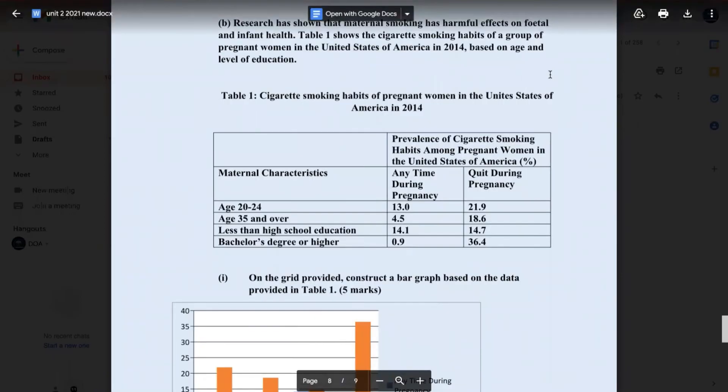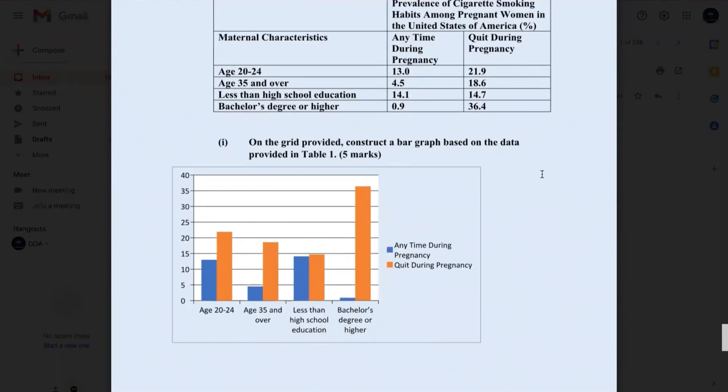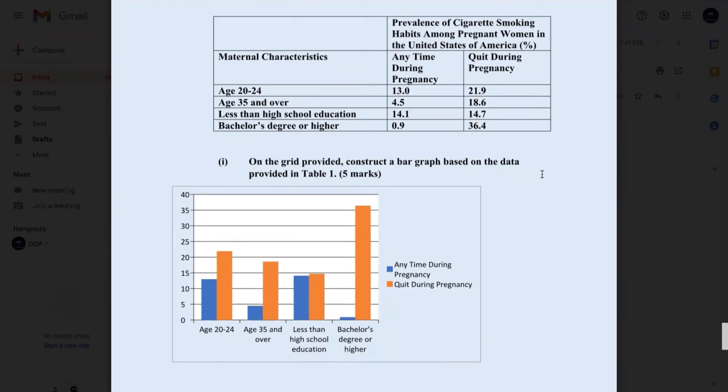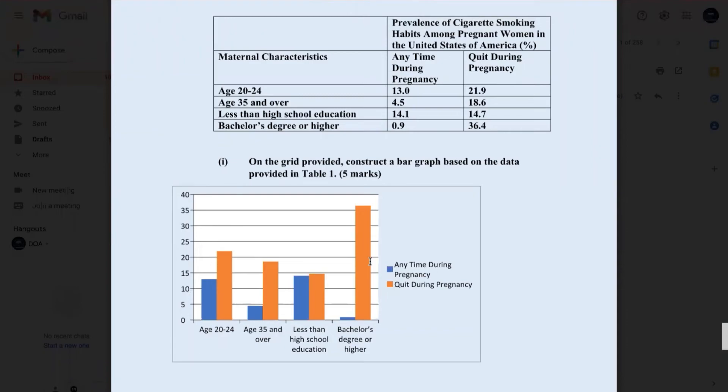Part B, research has shown that maternal smoking has harmful effects on fetal and infant health. Table 1 shows the cigarette smoking habits of a group of pregnant women in the United States of America in 2014, based on age and level of education. Table 1, cigarette smoking habits of pregnant women in the United States of America in 2014. On the grid provided, construct a bar graph based on the data provided in the table. Here is my bar graph. For five marks, ensure that you have a title. You need to have a representative title. You need to ensure that your bars are labeled and your axis too. Use a different shade because you'd be using pencils to use a different shade or grid to indicate which bar belongs to which cohort.